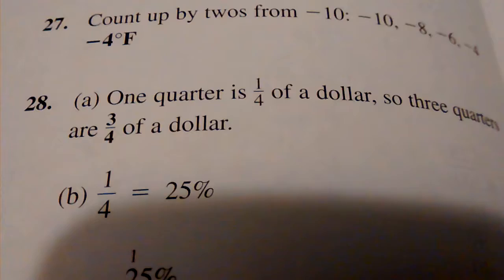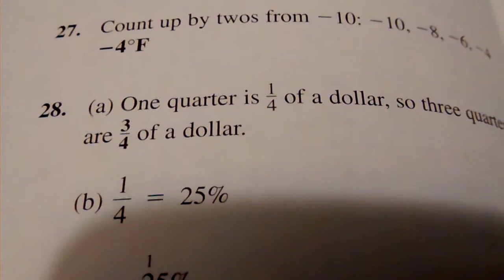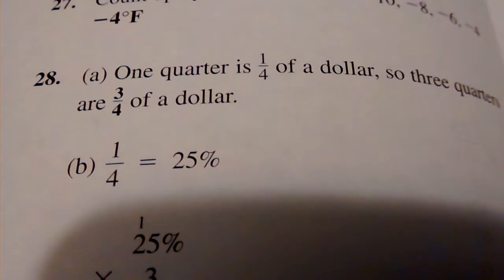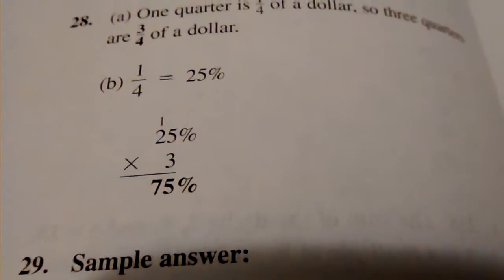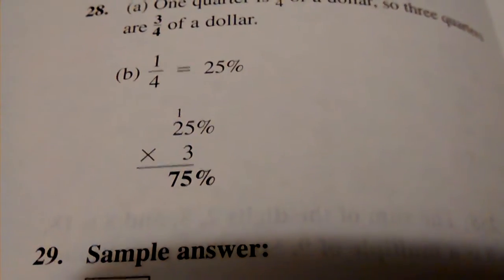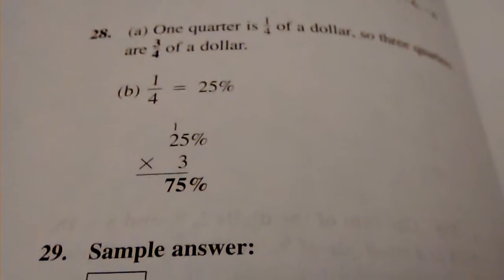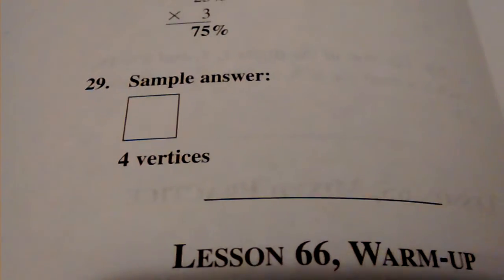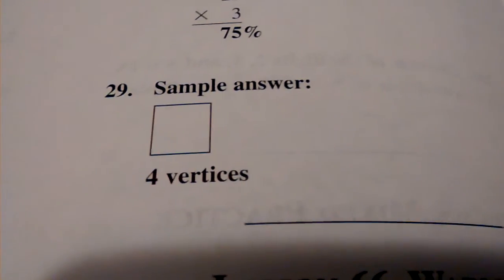Number 28, A, 3 fourths of a dollar. B, 1 fourth equals 25%, or the answer is 75%. Number 29, take a look at the picture.